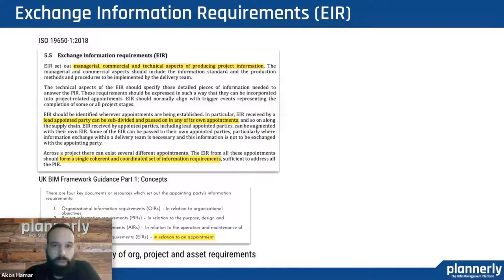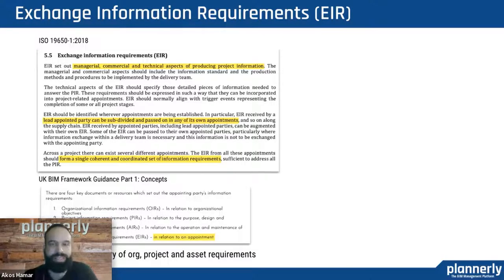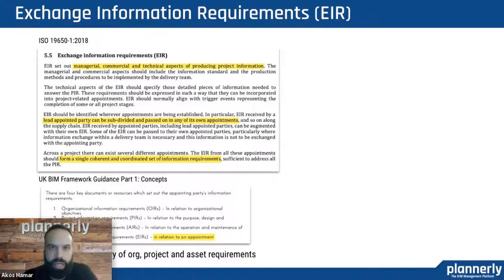When it comes to exchange information requirements, that's the combination of the previously mentioned organizational, asset, and project information requirements. This is really a contractual document where the appointing party sends it out to potential project participants to tender on, and they return their way of approaching and executing the project. We do have a template for that. But in a perfect world, you might want to use your existing documents, or use the OIR, AIR, and PIR documents we are providing and assemble your project-specific EIR in the application.